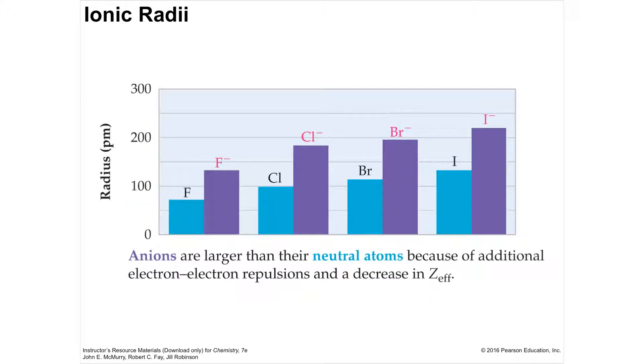Conversely, anions are larger because as you take an electron on yourself, those electrons are repelling each other. They try to spread out a little bit to stay away from each other as best possible. The size of an anion gets bigger than the neutral atom that it used to be.